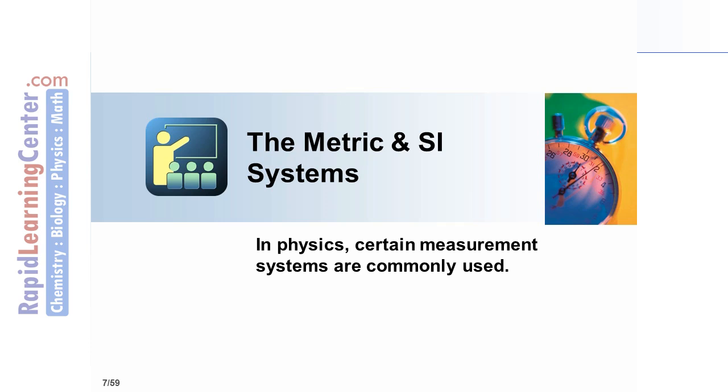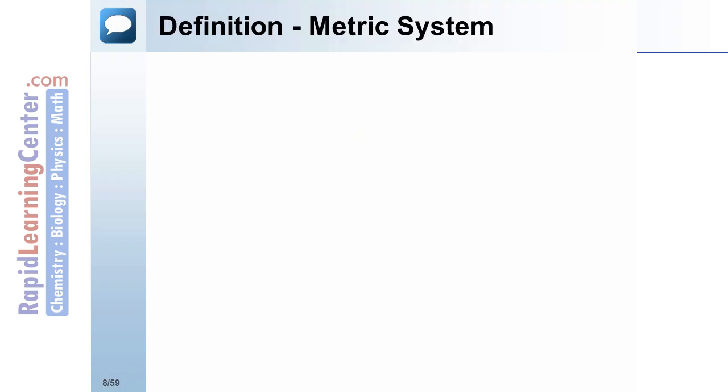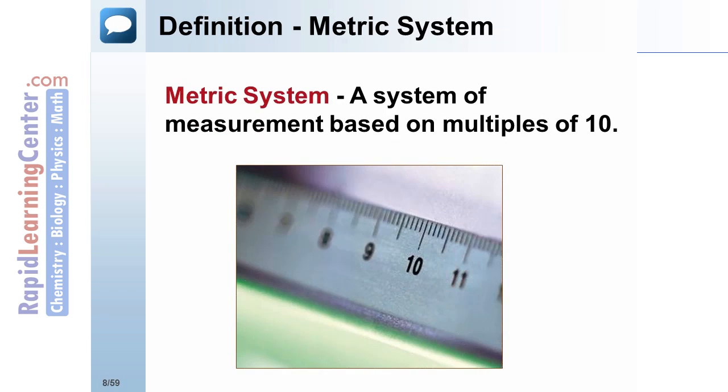Definition: Metric System—a system of measurement based upon multiples of 10. Thus, we will often use powers of 10 with the metric system.